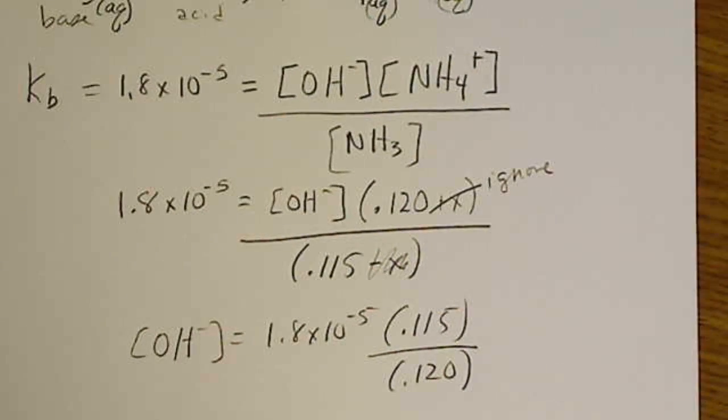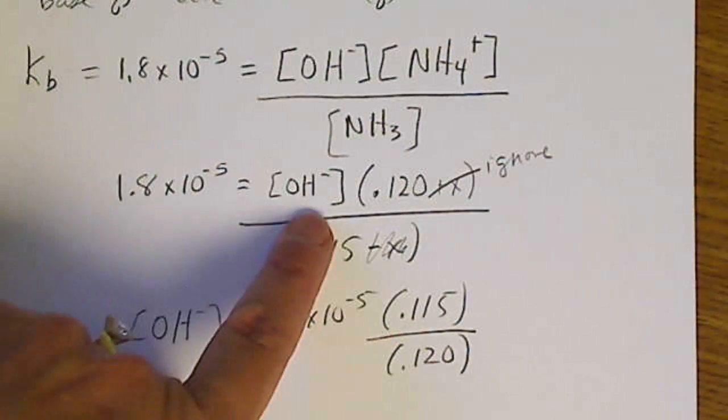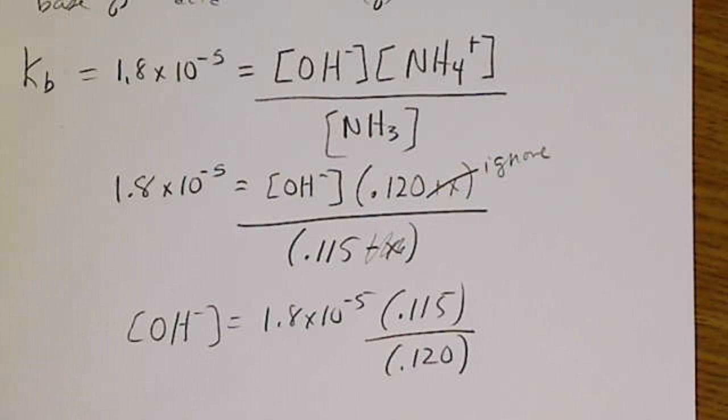When we are making pH calculations, we've got to be careful. And since we have OH minus, we're going to subtract the negative log of OH minus from 14.